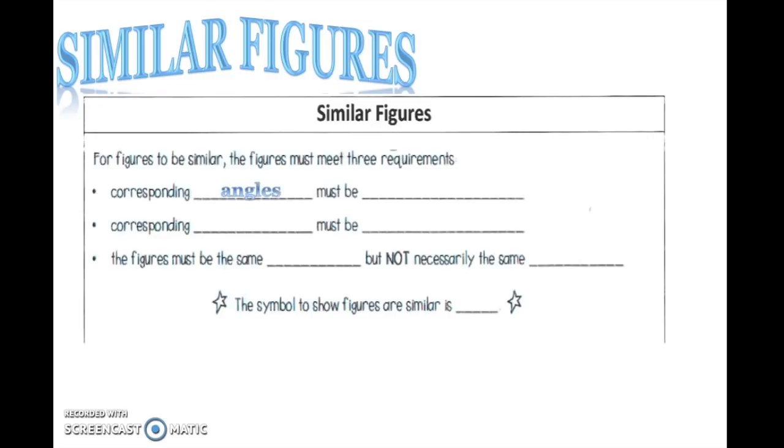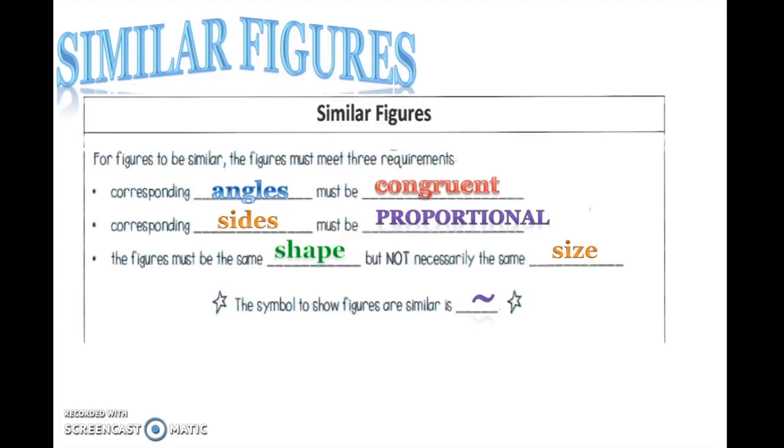First, corresponding angles must be congruent. Second, corresponding sides must be proportional. Three, the figures must have the same shape but not necessarily the same size. The symbol that denotes similar is that little symbol right there.